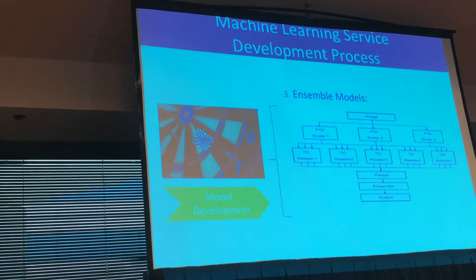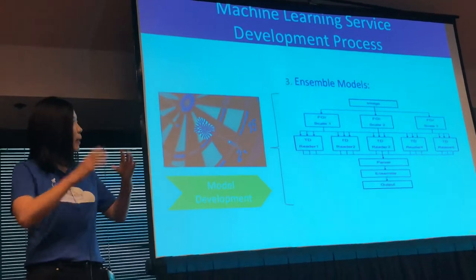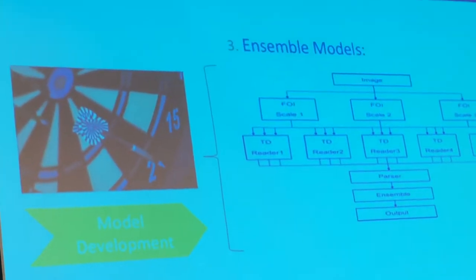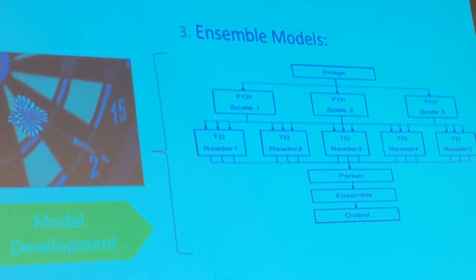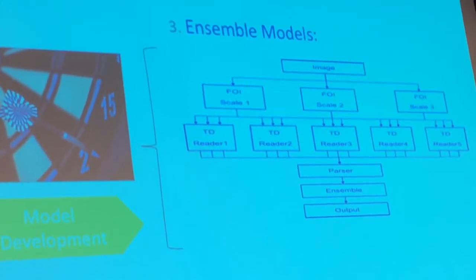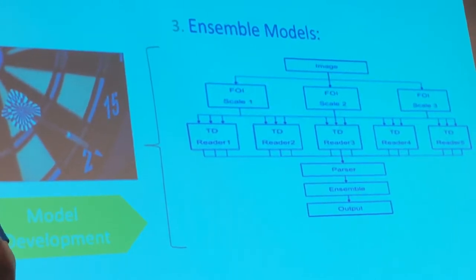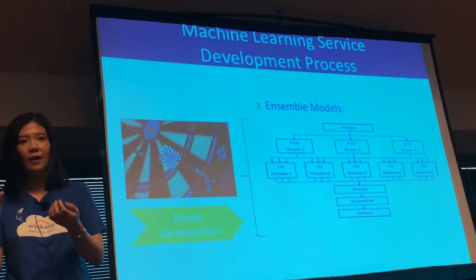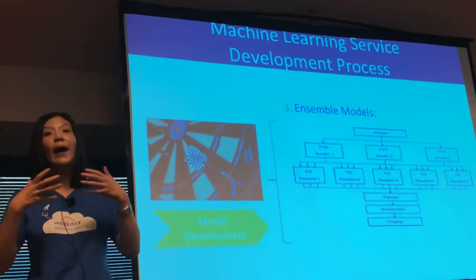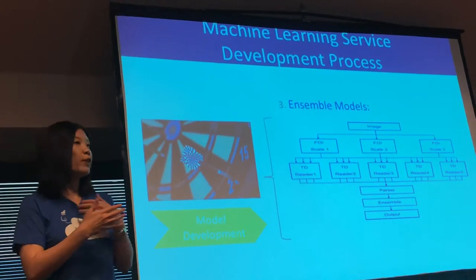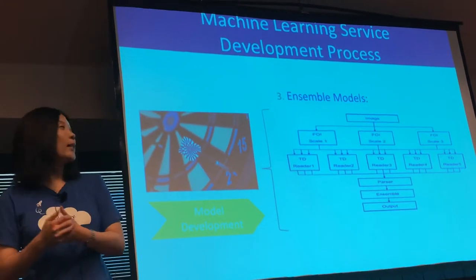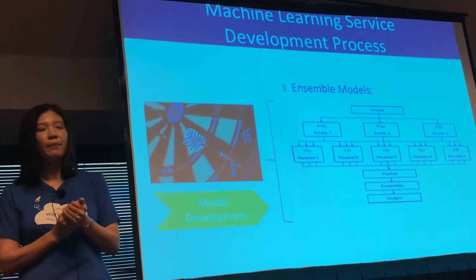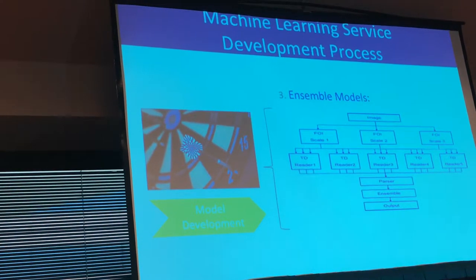To further improve performance, we used ensemble models. For Network 1 we found that receipts vary in scale and size, so we have three models optimized for different scales. For Network 2, we have different models optimized for characters, symbols, and digits respectively — five reader models in total. When multiple models return values, we use a majority vote approach to pick the most likely correct value. So we have three networks times five ensemble models, totaling 15 networks. That's how we improved model performance.